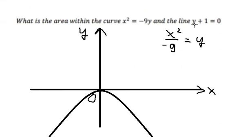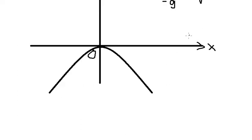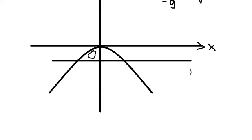Now we have y plus one — we move the one to the right — so we have y equal to negative one. The line y equal to negative one should be in here. The area we need to calculate is about this region here.